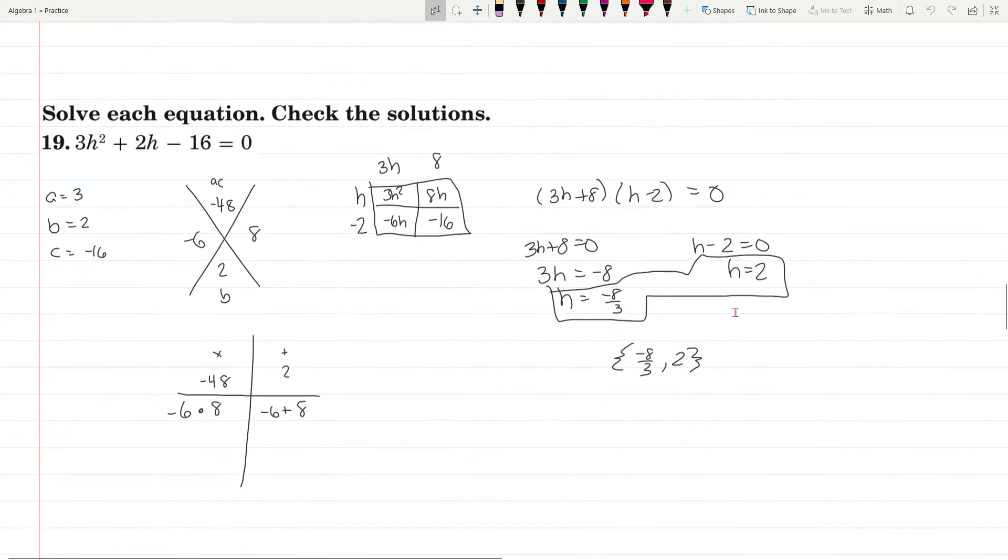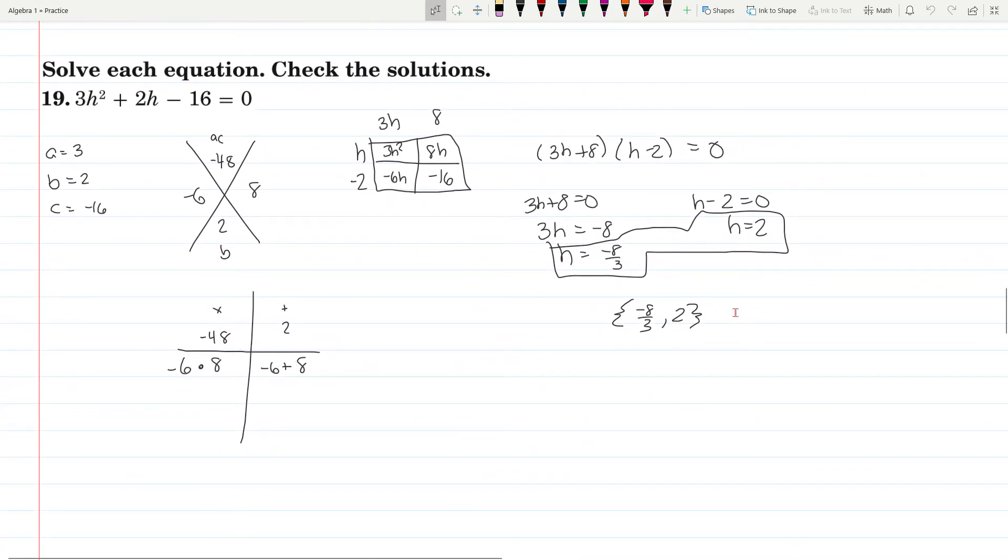Now we get to equations, the last 5 questions. We have 3h squared plus 2h minus 16 equals 0. So factor like we've been factoring. A is 3, B is 2, C is negative 16. So we're looking for a product of negative 48 that adds up to 2.